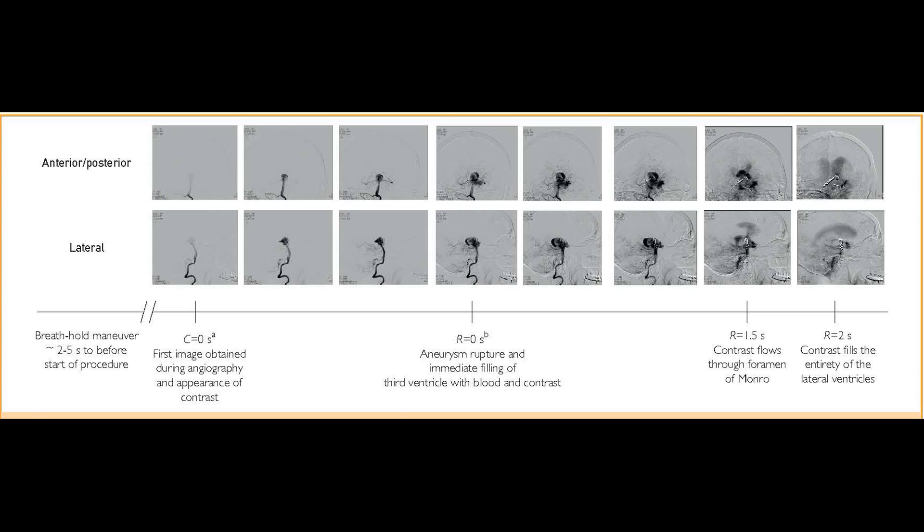Approximately five seconds after contrast injection was initiated, the aneurysm ruptured. This and the subsequent subarachnoid hemorrhage was monitored in real time at a sampling rate of two images per second. By a mere two seconds after aneurysm rupture, contrast material had filled the lateral third and fourth cerebral ventricles. We were able to present angiographic images from these sequences in our publication and also describe a confirmatory computed tomographic scan.